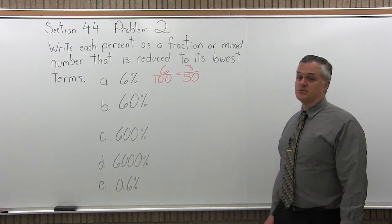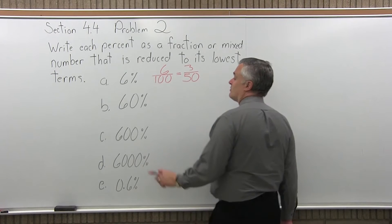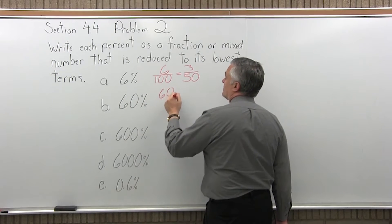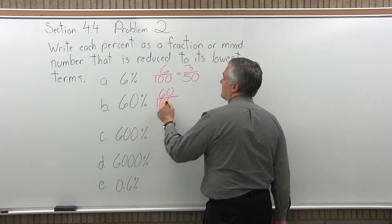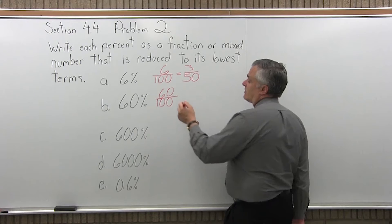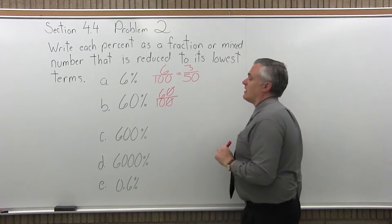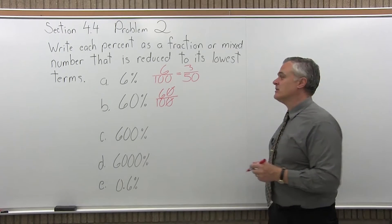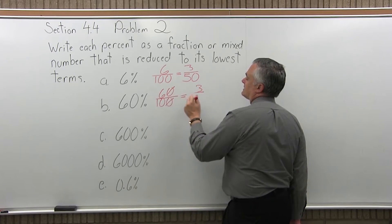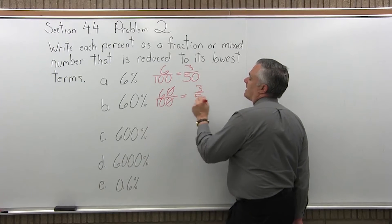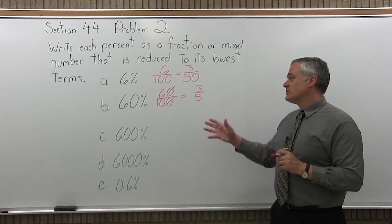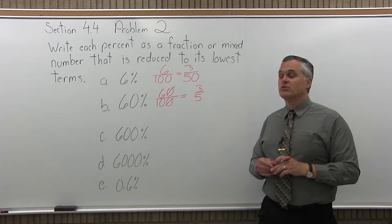The next one is 60%. So same process, to convert that to a fraction, write the percent over 100. And then reduce if you can. Well, I have a zero on the end, so I can at least cancel the zero. So I have 6 over 10, again those are even, so I can at least take half of each. So half of 6 is 3, half of 10 is 5. 3 fifths. Can I reduce any further? No. That's as far as it goes. So 60% as a fraction would be 3 fifths.